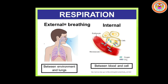In internal respiration, there is taking in of oxygen and giving out of carbon dioxide. The circulatory system transports oxygen and carbon dioxide to and from all parts of the body. It occurs between the cell and the blood. Hemoglobin in the red blood cells (RBC) helps in the transport of oxygen and carbon dioxide.